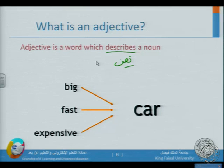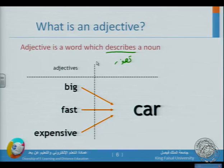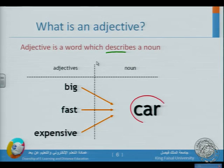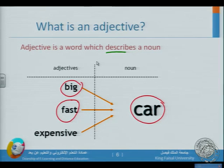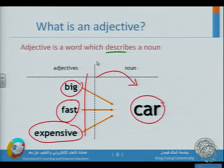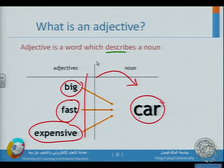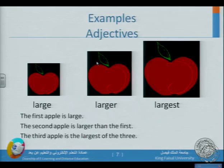What is an adjective? An adjective is a word which describes a noun — it describes (tussif) the noun. For example: 'big car' — 'car' is a noun and 'big' is an adjective. 'Fast car', 'expensive car' — all of these use adjectives. The adjective describes the noun and usually comes before it.